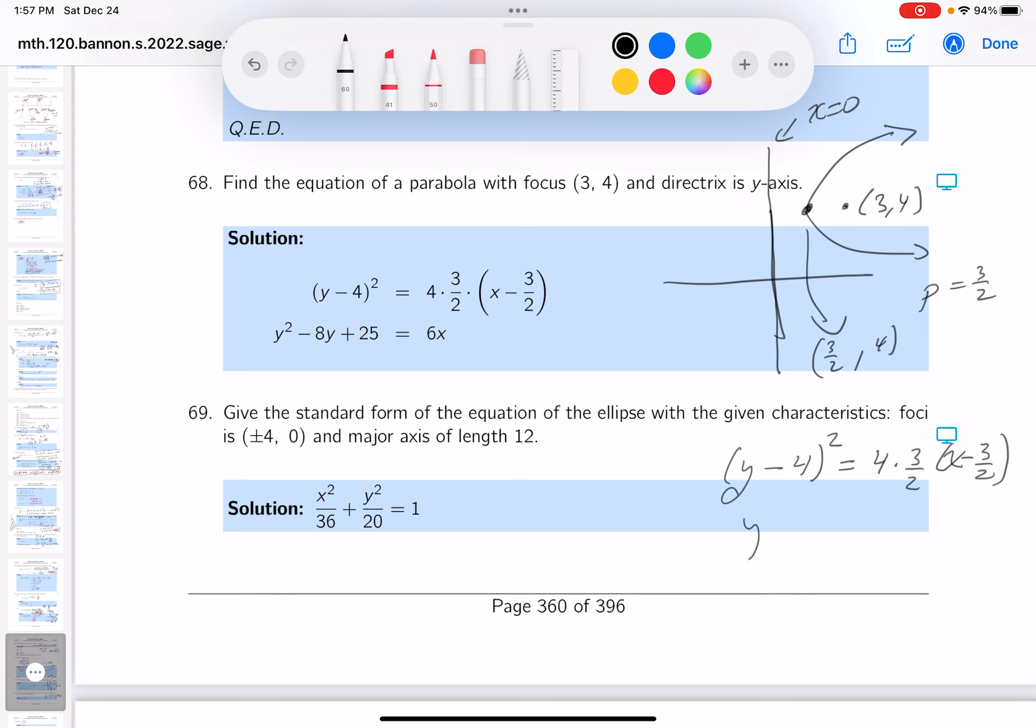Let's simplify it a little tiny bit. y minus 4 squared. 2 goes into 4 twice, so 6. x minus 3 halves. By the way, as far as I'm concerned, that's a good answer there.